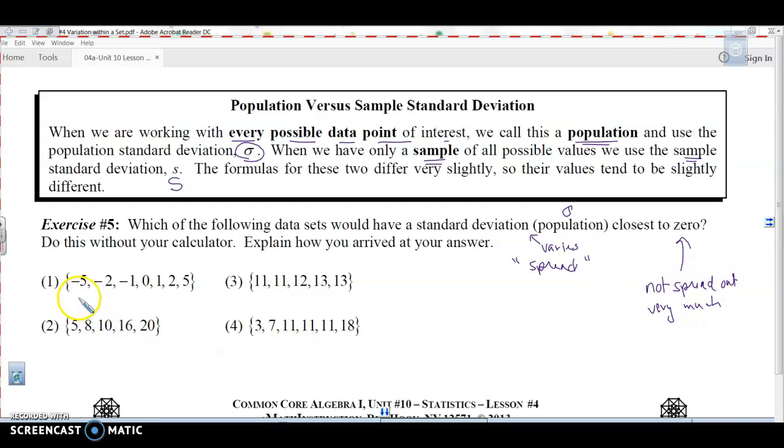So this one goes negative 5, negative 2, negative 1, 0, 1, 2, 5. This one: 5, 8, 10, 16, 20. This one: 11, 11, 12, 13, 13. And this one: 3, 7, 11, 11, 11, 11, 18.